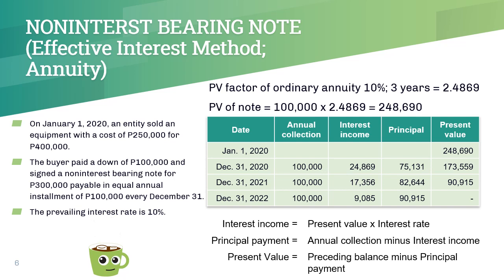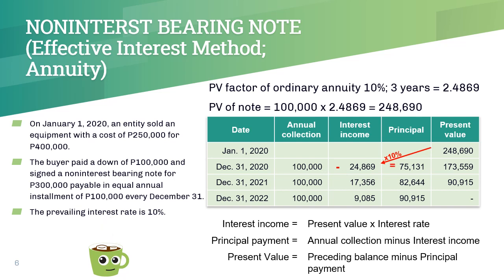Here we have the amortization table. Observe that at the end of 3 years, we will have a present value of 0, because we will have received all installments on the note by then. Each year, our present value grows by 10%, so in the first year, the interest income is computed as 248,690 pesos × 10%, which gives us 24,869 pesos. Each year, we receive an installment of 100,000 pesos, which is first applied to interest income and the remainder is applied to the principal. Thus, our present value decreases by 75,131 pesos at the end of the first year. The subsequent years are computed in the same manner.